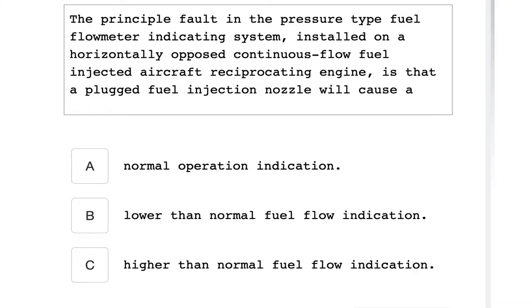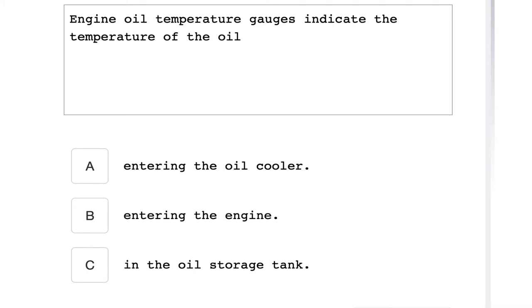The principal fault in the pressure type fuel flow meter indication system installed on a horizontally opposed continuous flow fuel injected aircraft reciprocating engine is that a plugged fuel injection nozzle will cause a higher than normal fuel flow indication. Engine oil temperature gauges indicate the temperature of the oil entering the engine.